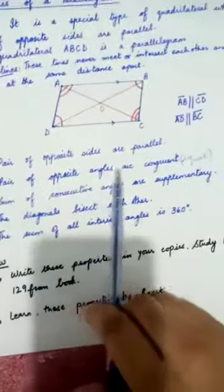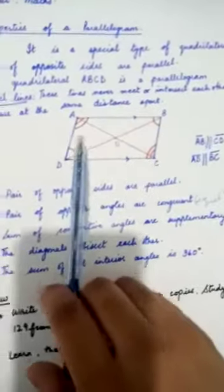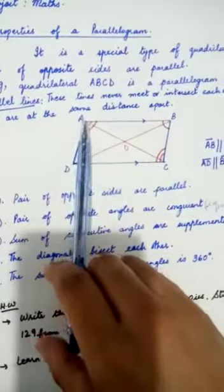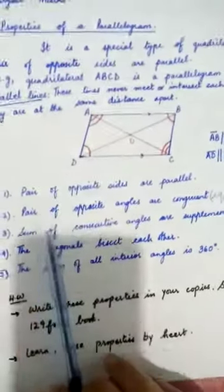Point 2 says pairs of opposite angles are congruent, and congruent means equal. So opposite angles like angle A is congruent to angle C, and angle B is congruent to angle D.